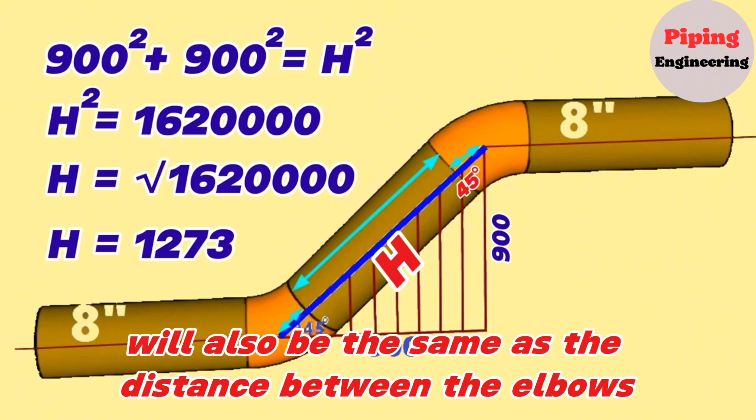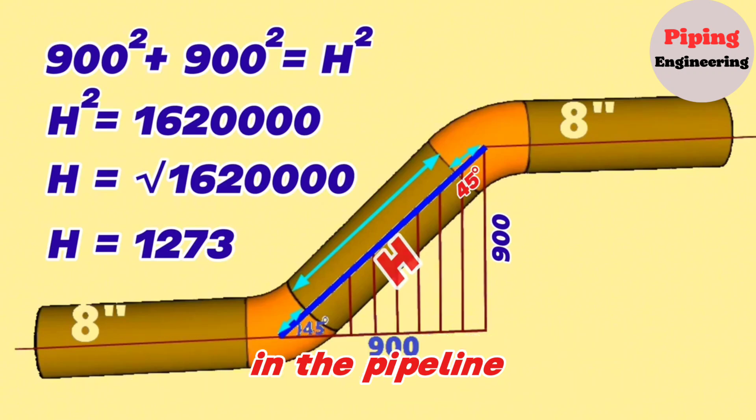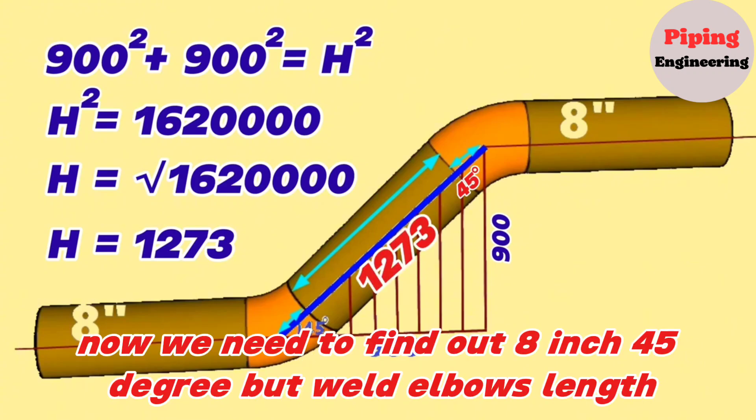This measurement will also be the same as the distance between the elbows in the pipeline. Now, we need to find out the 8-inch, 45-degree butt weld elbow length.